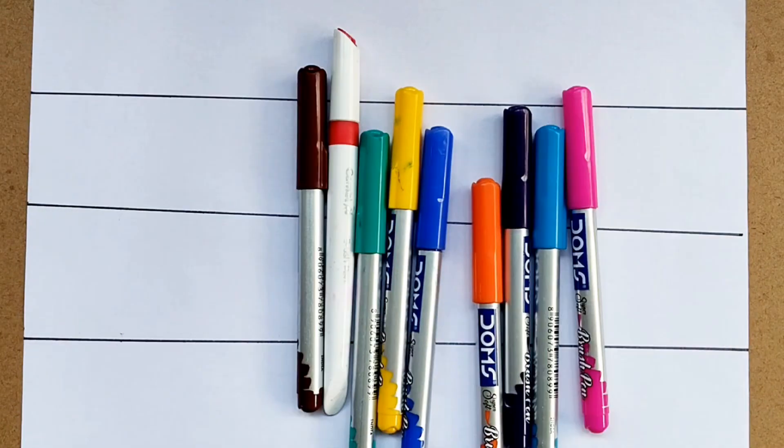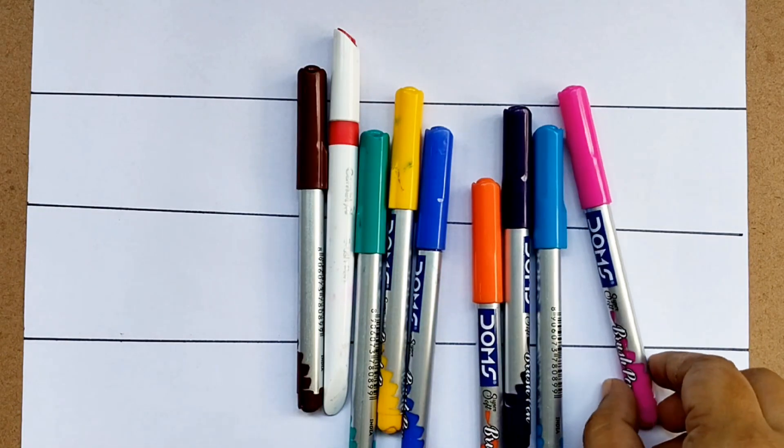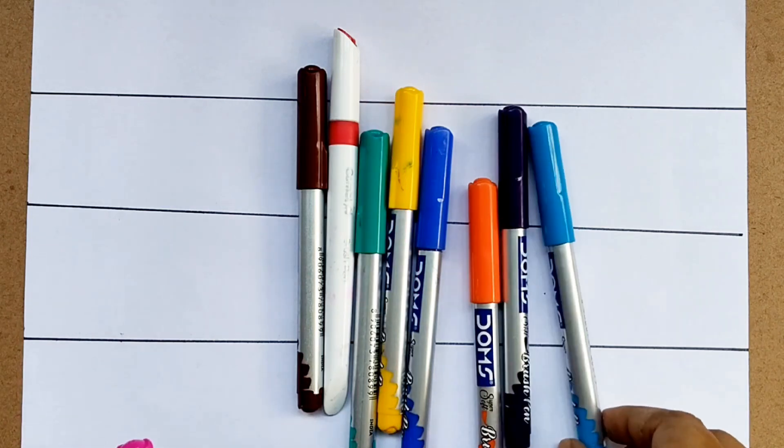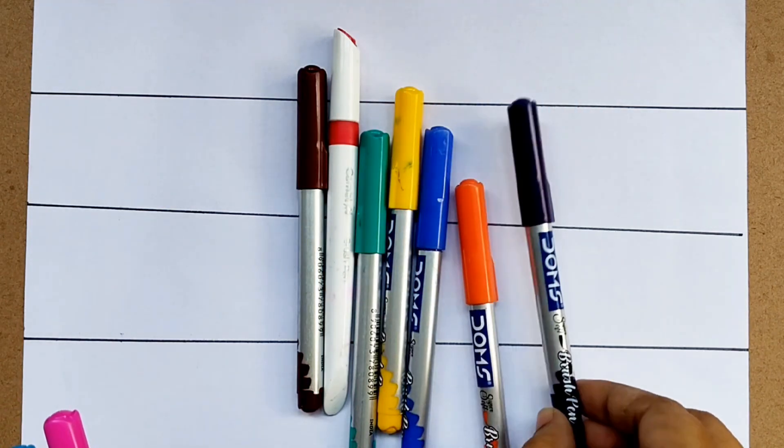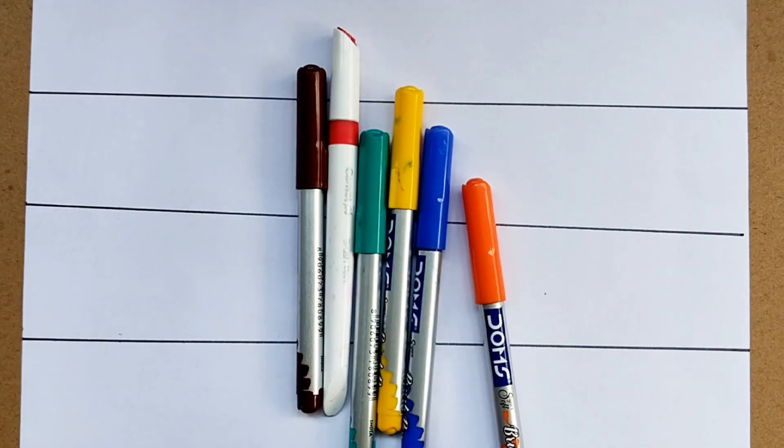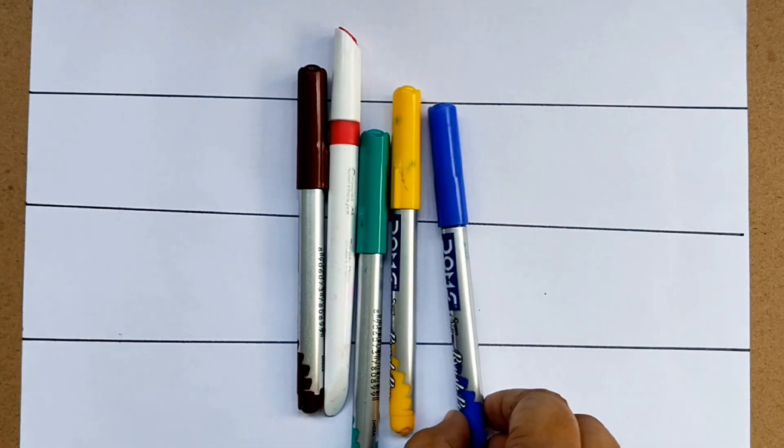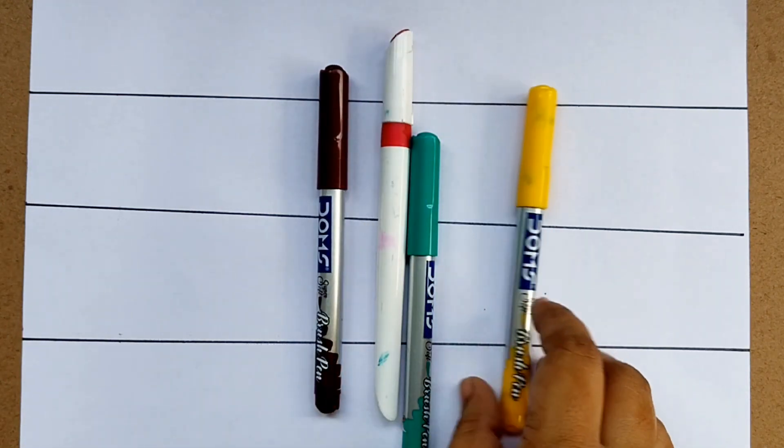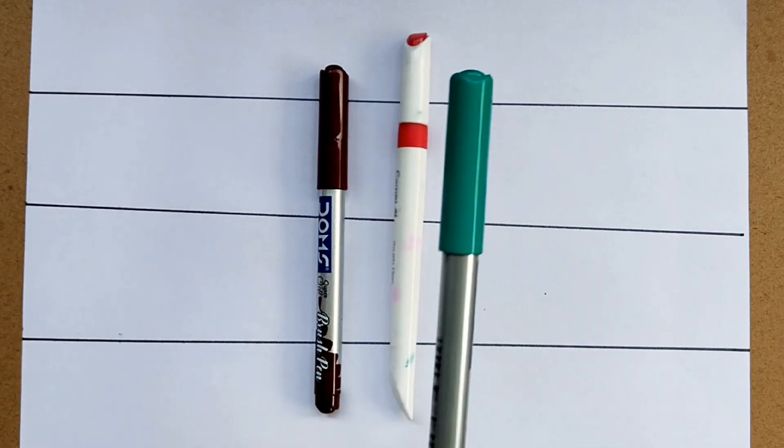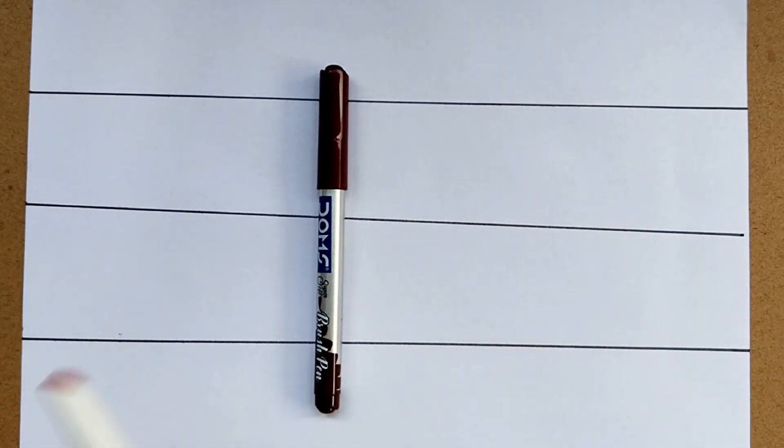Hi Kids! First, let me show you some colors. Pink color, light blue, purple, orange, blue, yellow, green, red and brown.